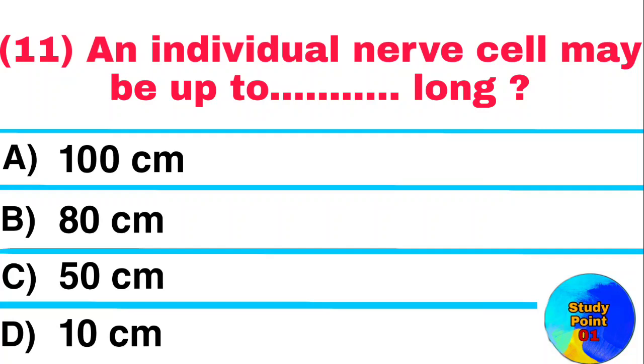Question: An individual nerve cell may be up to how long? Answer: 100 cm.